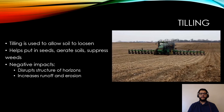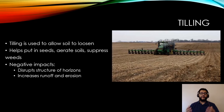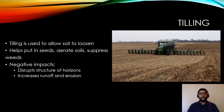Tilling allows the soil to loosen. Machines dig into the soil, helping loosen it and place seeds inside the ground. This helps suppress weeds and aerate the soil. However, the negative impact is disrupting the structure of your horizons — those layers of soil — and increasing runoff and erosion.